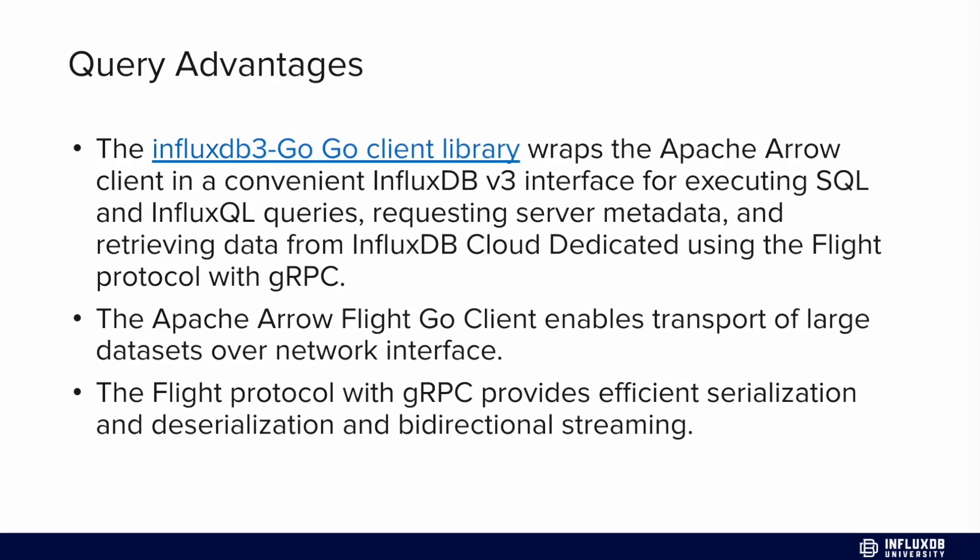The way it works is that it wraps the Apache Arrow client in a convenient InfluxDB v3 interface, and this allows you to execute both SQL and InfluxQL queries, request server metadata, and retrieve data from InfluxDB Cloud Dedicated or InfluxDB Cloud v3 using the Flight protocol with GRPC. One advantage here is that the Apache Arrow Flight Go client enables really high transport of large datasets over a network interface by utilizing the Flight protocol and GRPC, which provides really efficient serialization and deserialization as well as bi-directional streaming.